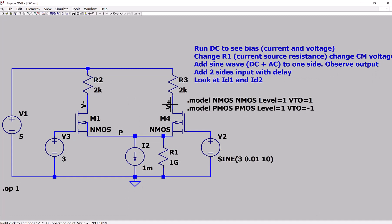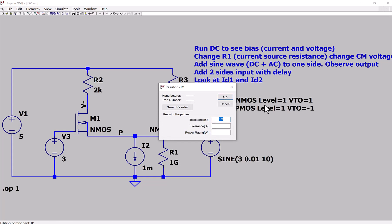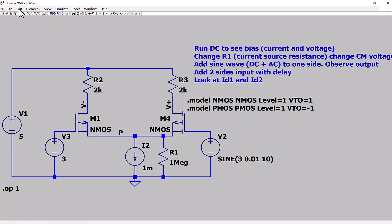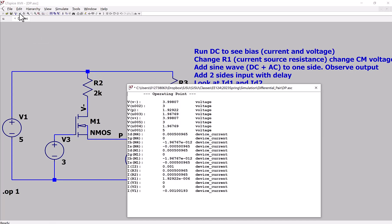Now, then maybe I will change this one. If you don't have a good ideal current source, you have a very lousy one. How about 1 megaohm? And now I run it again. Well, now for M4, I have a pretty large current going through it.